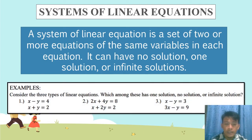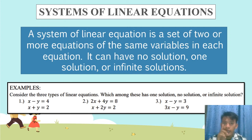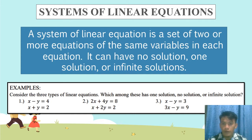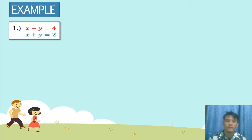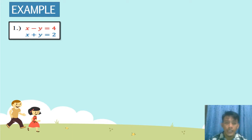Consider the three types of linear equations. Which among these three examples has one solution, no solution, or infinite solutions? Let's solve number one. The first equation is x minus y is equal to 4, and the second equation is x plus y is equal to 2.